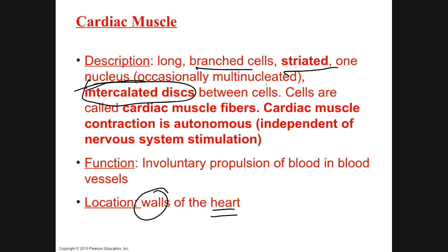The location of cardiac muscle is the walls of the heart. Every time you see the word 'walls,' that's going to be muscle tissue — in the walls of an organ. Cardiac muscle and smooth muscle will always be described as being in the walls of an organ.